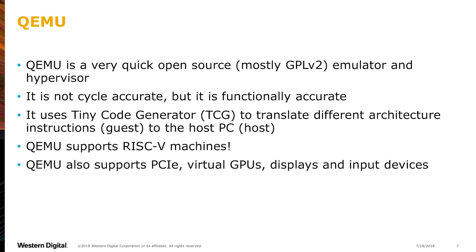We simulate with QEMU, which is an open-source emulator and hypervisor. It's not cycle-accurate like Spike, but it's functionally accurate. The QEMU emulator runs on X86 as the host, and RISC-V is the guest. The tiny code generator component in QEMU basically translates RISC-V instructions to X86 and runs them on the host. QEMU also has support for PCI, virtual GPU displays, and input devices, which makes it a compelling case for building and porting a graphical desktop.